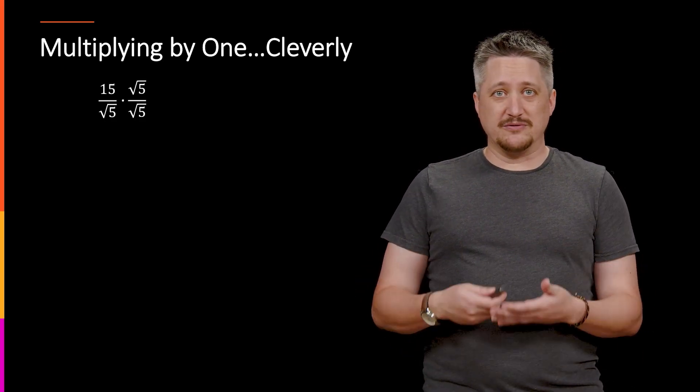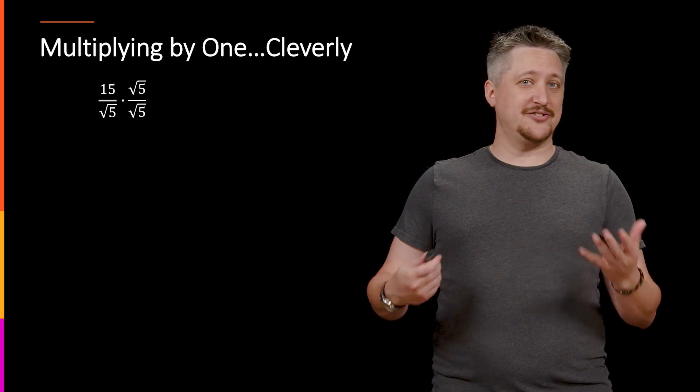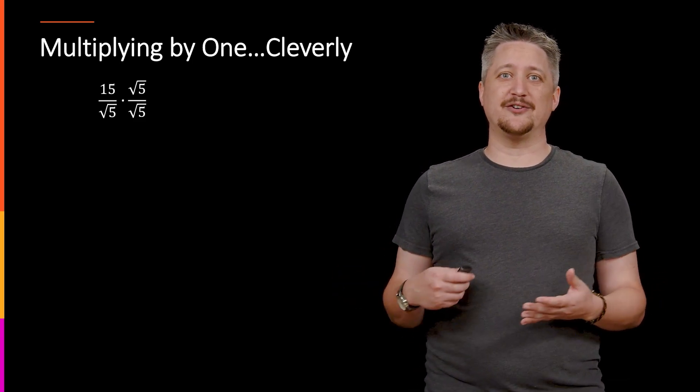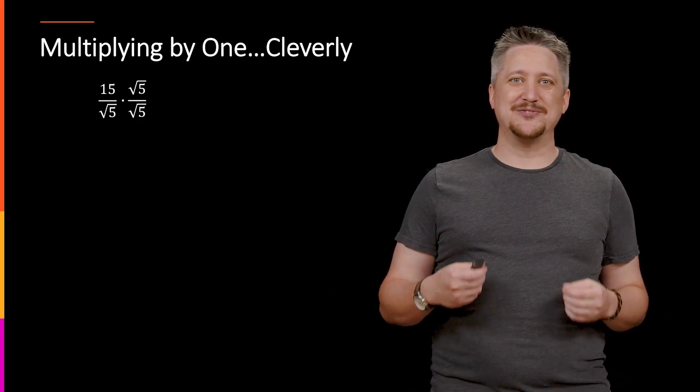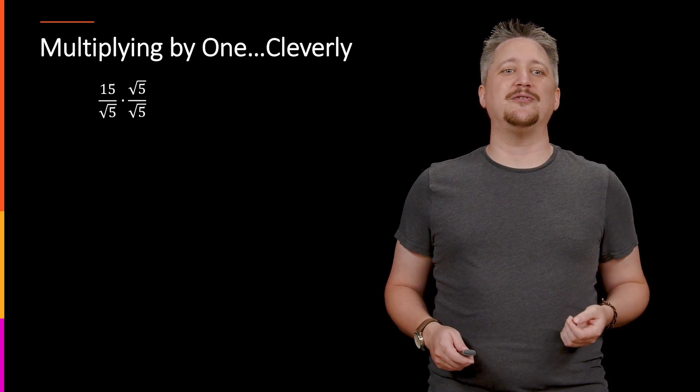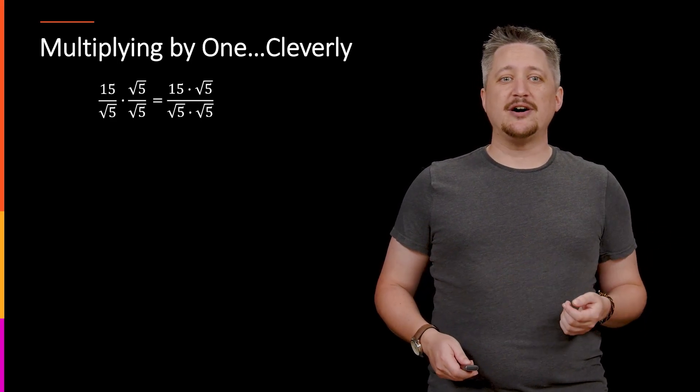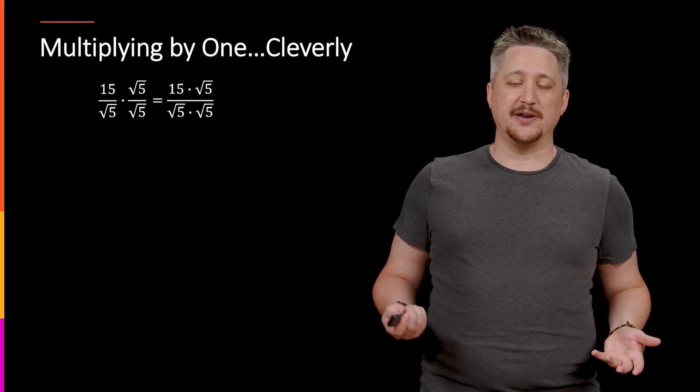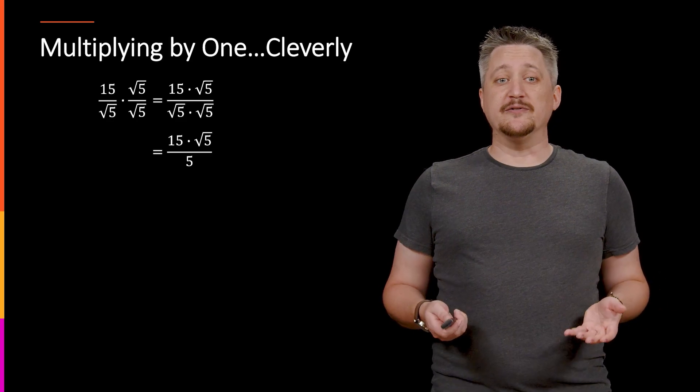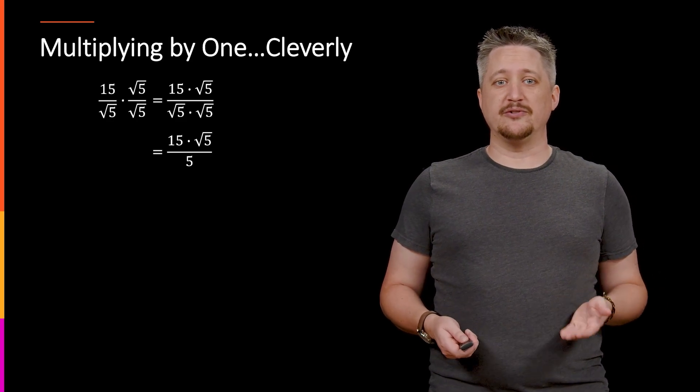And then we unravel it from there. So that first step is the clever step, and then everything from there hopefully follows along as a result. Multiply across - that's just how multiplying fractions work. Then we can simplify. The bottom square root of 5 times square root of 5 is just 5.